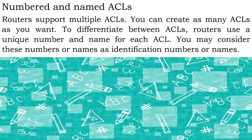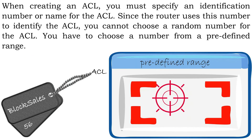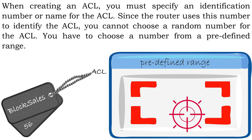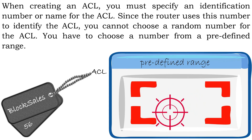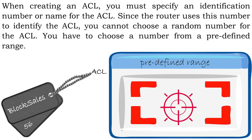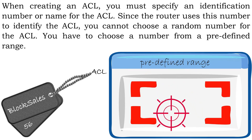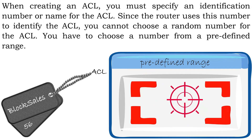Routers support multiple ACLs — you can create as many ACLs as you want. To differentiate between ACLs, routers use a unique number and name for each ACL. You may consider these numbers or names as identification numbers or names. When creating an ACL, you must specify an identification number or name. Since the router uses this number to identify the ACL, you cannot choose a random number — you have to choose a number from a predefined range.